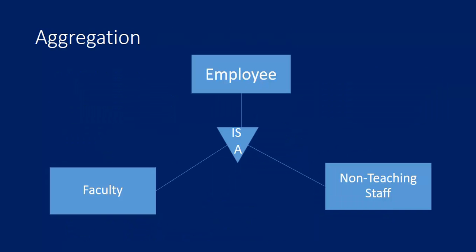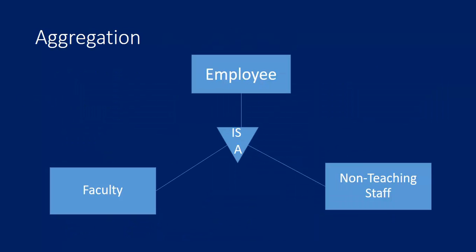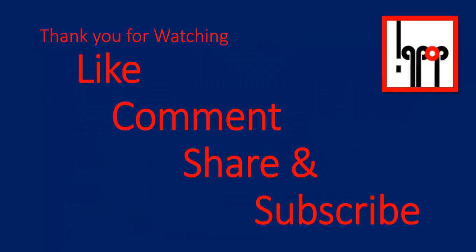The reverse concept is called aggregation. For example, we have employees — some are faculty and some are non-teaching staff. Faculty is-a employee; non-teaching staff is also an employee. If we want to see the list of all employees, we have to show the list of faculty as well as the list of non-teaching staff. This 'is-a' relationship is called aggregation. Thank you for watching — like, comment, share, and subscribe.